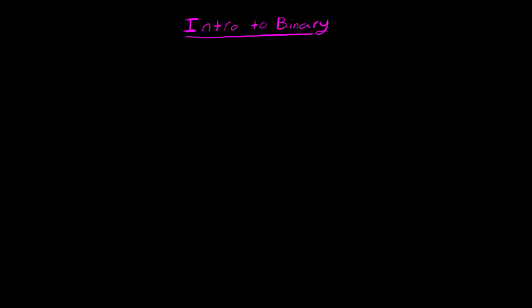The easiest way to explain binary is to start with what we already know. For the most part we all count in base 10. So what does base 10 really mean? For starters it means we can use the digits 0 through 9 — 10 total digits to work with. The next important thing to note is that the position of each digit in base 10 has a very specific meaning.